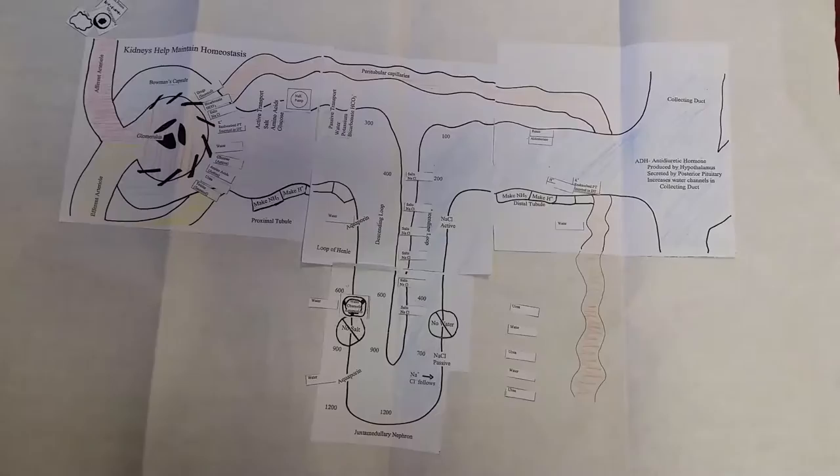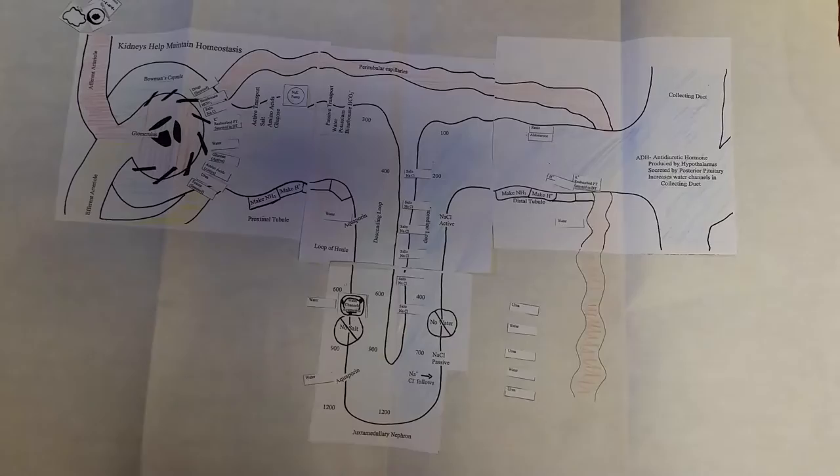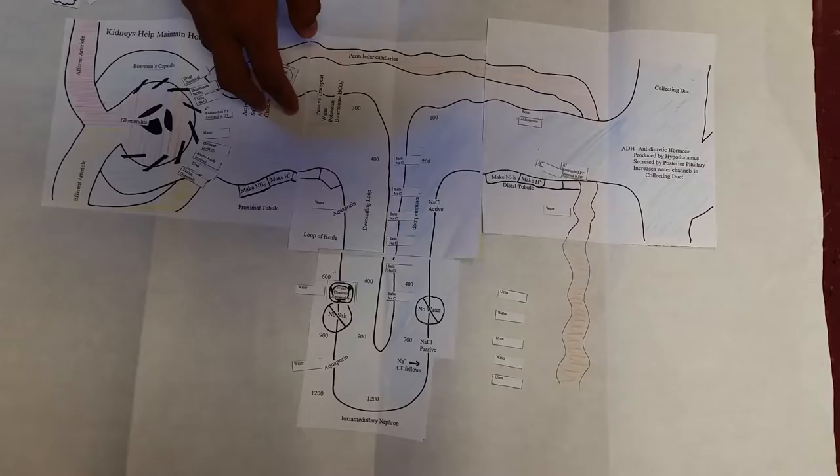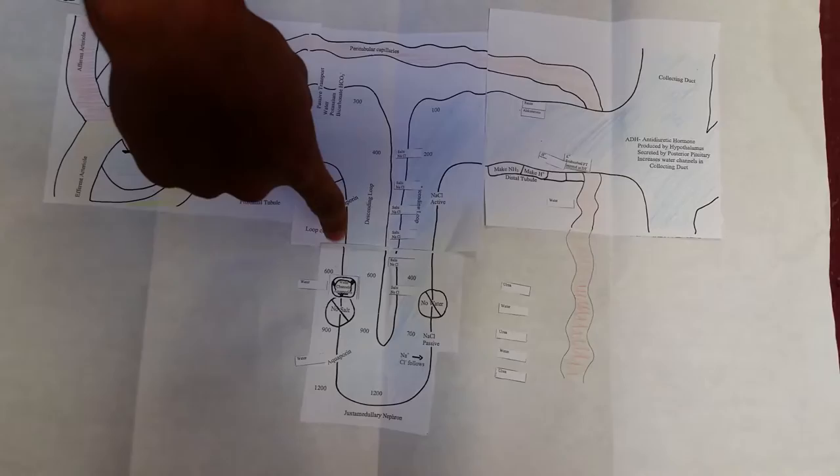To basically sum up the nephron function: in the proximal tubule, the main secretion and reabsorption occurs. In the loop of Henle, the concentration balance is most important. And then in the distal tubule, it's more of fine-tuning things.